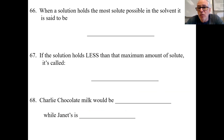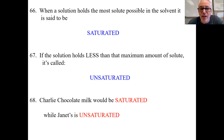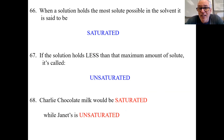When a solution holds the most possible solute in solution, that's called saturated. If there's less than that amount, it's unsaturated — it's like Charlie chocolate milk and Janet chocolate milk. Saturated or unsaturated.